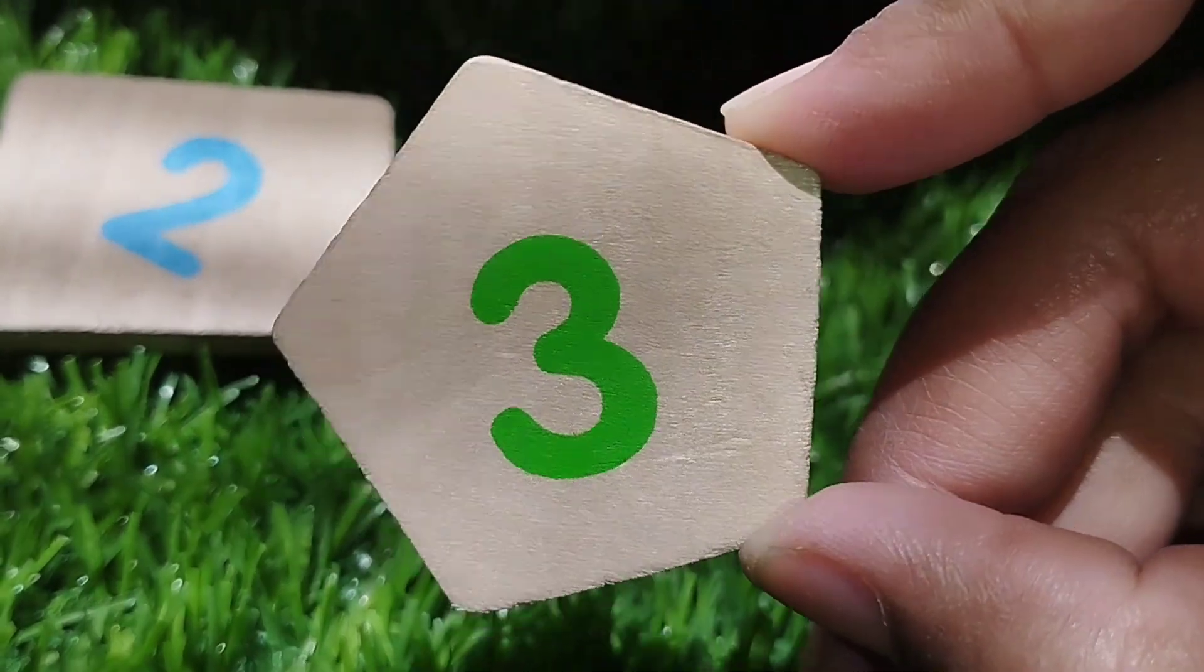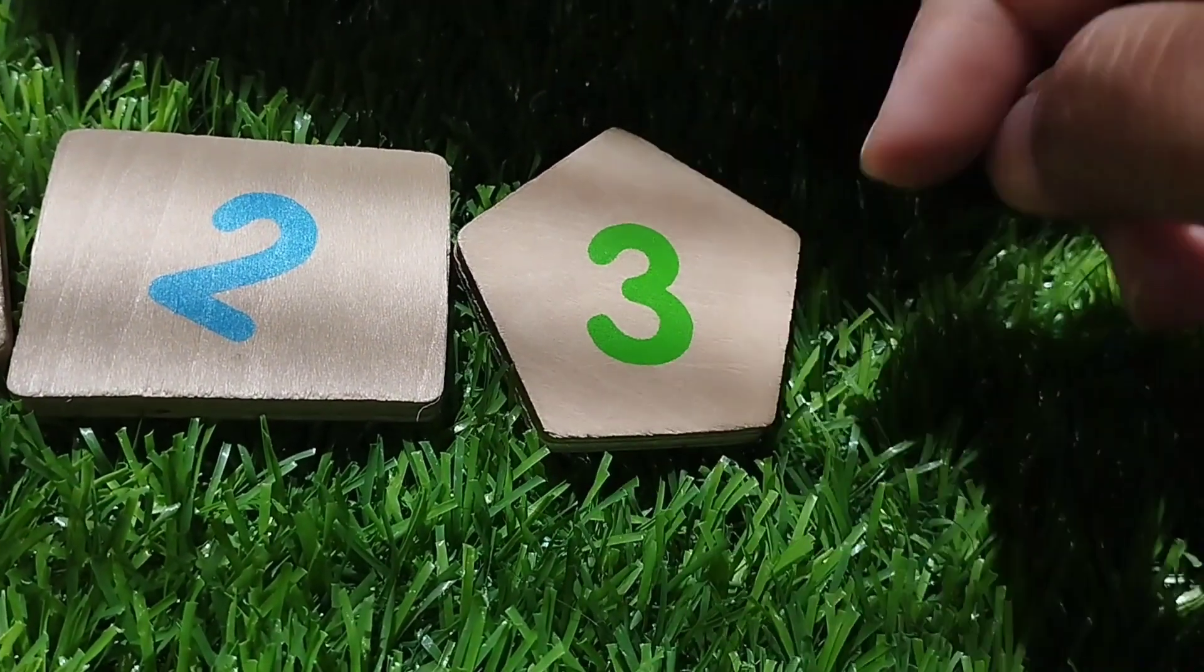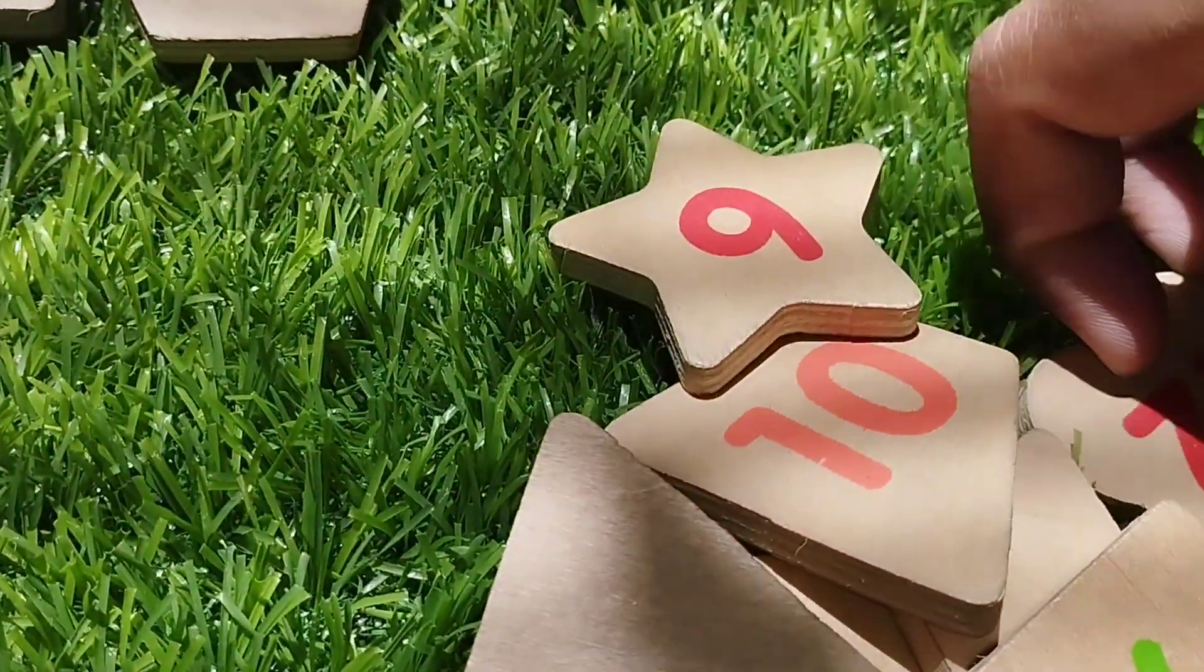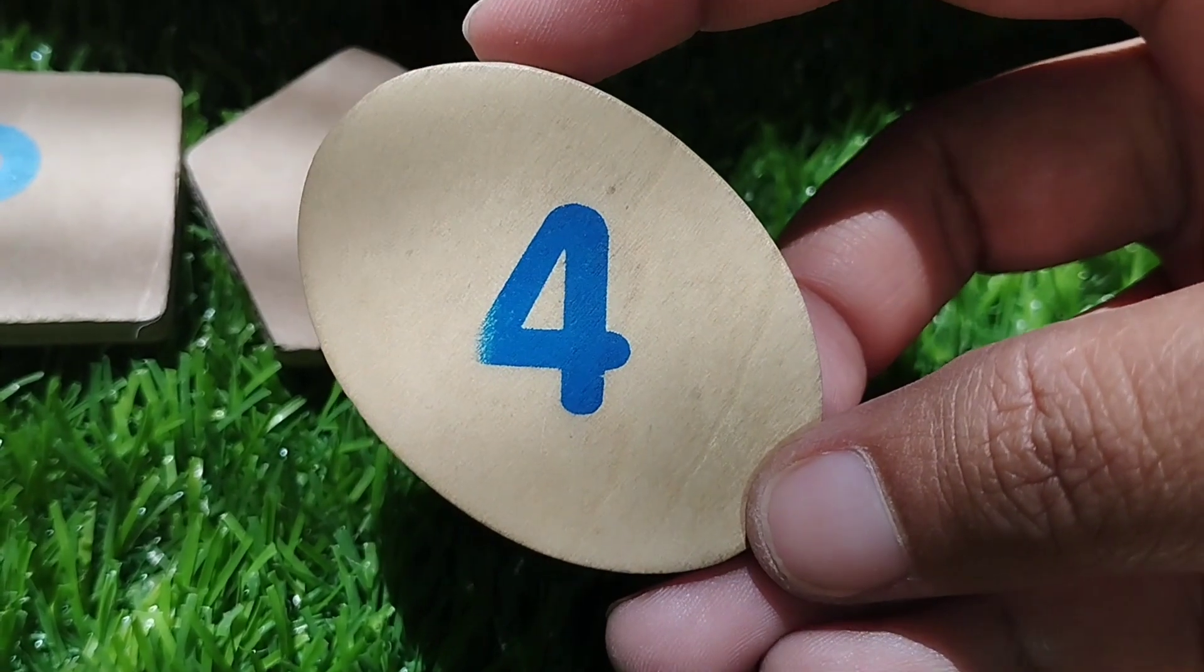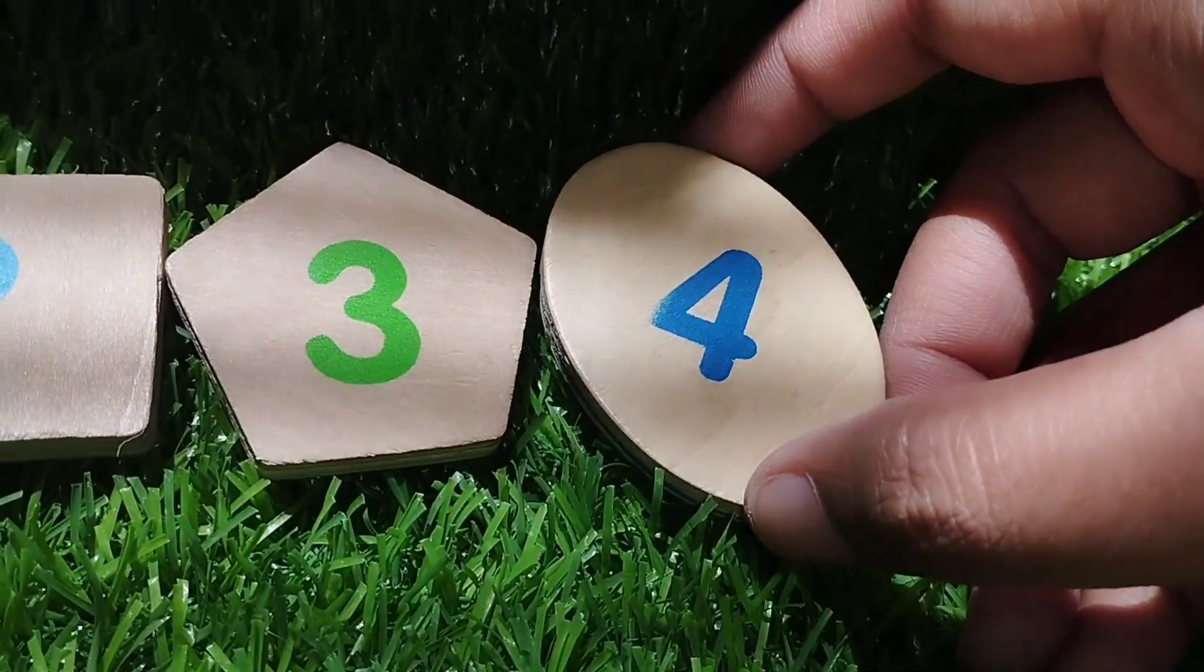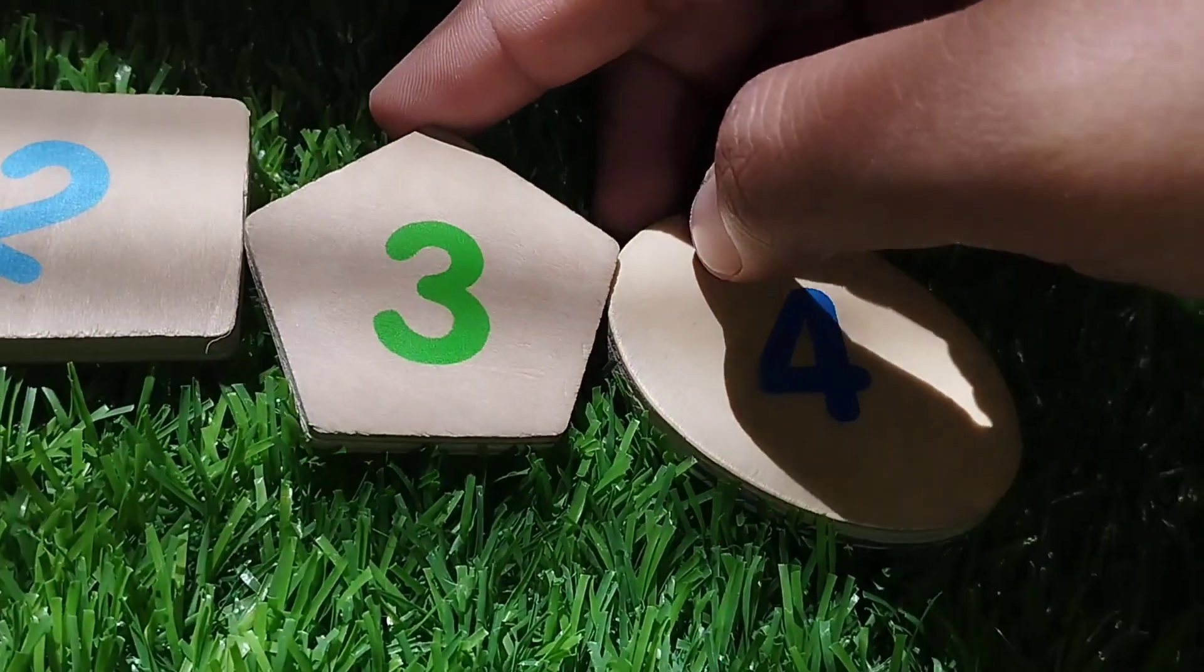This is pentagon shape. The number is three. The next shape is oval. The number is four. Oval shape.